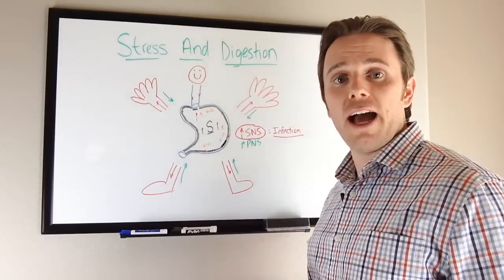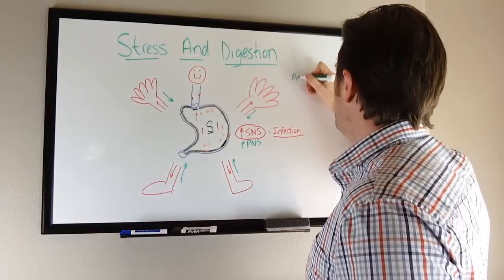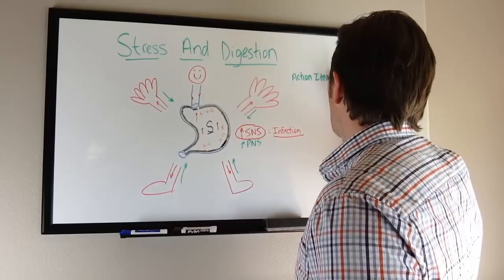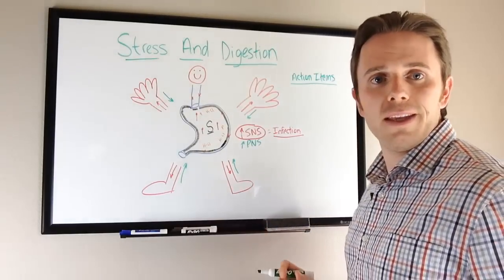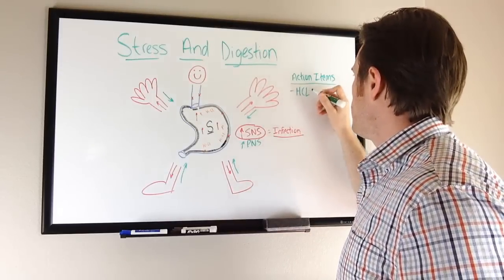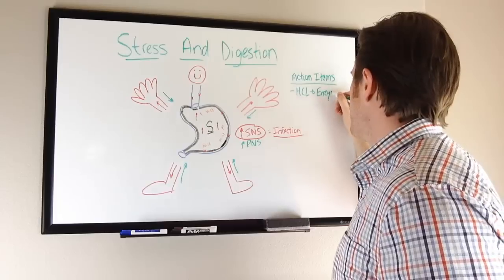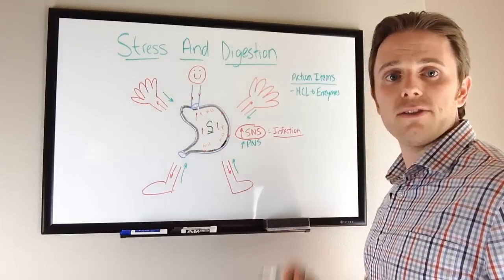So let's look at a couple of action items here. First thing you can do is take some HCl. HCl can be very helpful, and some people even do better combining it or getting an HCl combined product that has enzymes and or bile salts in there as well. So HCl and enzymes.